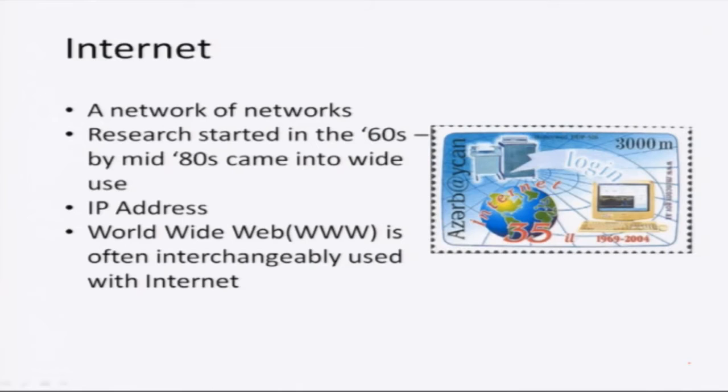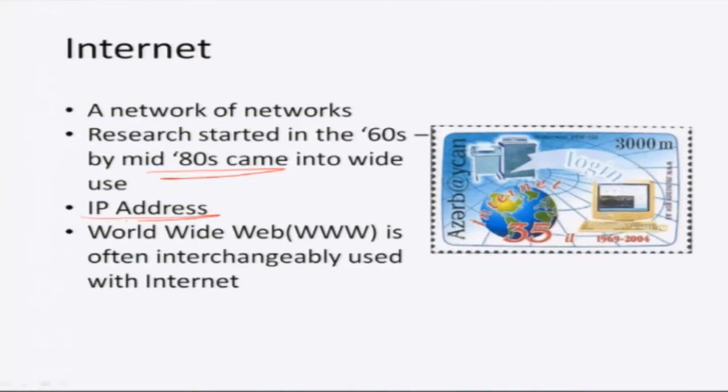The research in building computer networks started in the 60s. Just like when I have a house, I have an address for my house — a house number, a street number and so on — similarly the internet has addresses called IP addresses. So you can locate computers on the internet using their IP address.